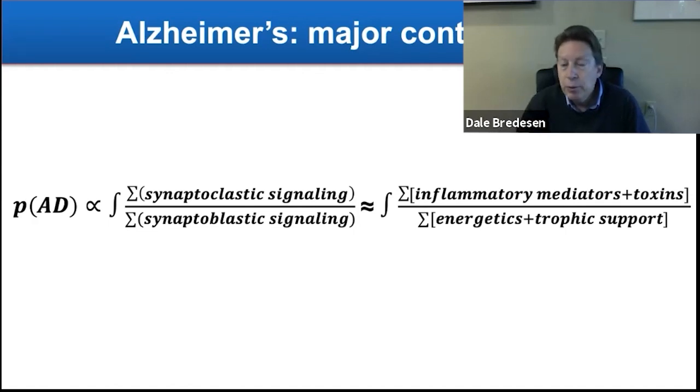And then finally, trophic support. Three sorts of things: growth factors like nerve growth factor, BDNF, things like that. The second thing is hormones - estradiol, progesterone, pregnenolone, testosterone, DHEA. All of these things are critical to support synapses. And then thirdly, it's nutrients - B12, vitamin D, things like this that are absolutely critical.